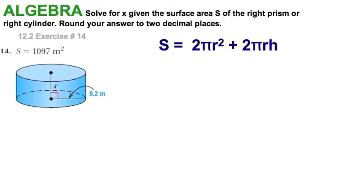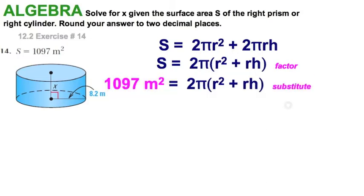Anyone can work a problem forward, let's take this one backwards. Given surface area S = 1097 m² for this entire cylinder, I've got two things to do. One is to factor out the 2π from both terms, and the other is to substitute this given value. Now I can divide both sides of the equation by 2π.